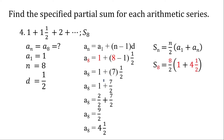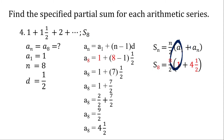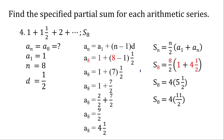Now let's get the sum of the first 8 terms. n is 8, a sub 1 is 1, and the last term is 4 and 1/2. So 1 plus 4 and 1/2 is 5 and 1/2. It's easier to work with improper fractions — converting 5 and 1/2: 2 times 5 is 10 plus 1 is 11, giving 11/2. Then 8 divided by 2 is 4, times 11 is... we have 4 times 11/2, and since 4 divided by 2 is 2, then 2 times 11 is 22.